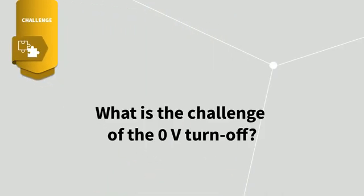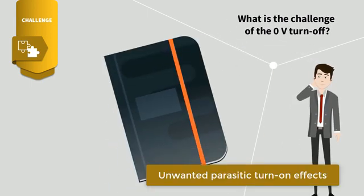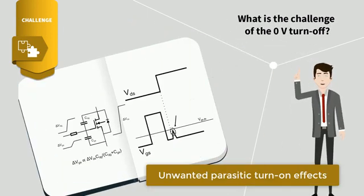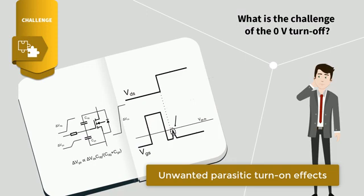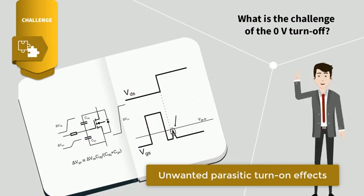So, what is the challenge of the zero-volt turn-off? Basically, the unwanted parasitic turn-on effects. As a MOSFET can be represented as a capacitance divider, any drain-source voltage change will result in a gate-source voltage change. If the gate-source voltage is higher than the MOSFET's threshold voltage, the MOSFET will turn on slightly, which will increase the turn-on losses.